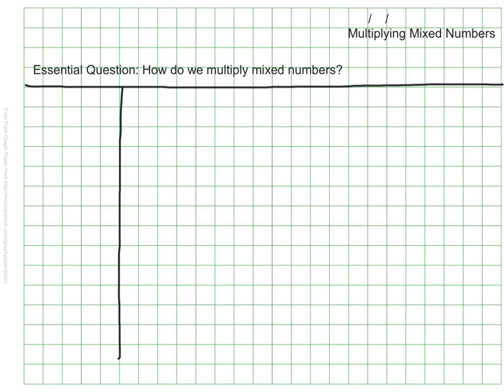We already know how to multiply fractions. So what we want to do is take what we know about multiplying fractions and figure out how we can multiply mixed numbers. For example, how would we multiply the following? We want to find one-third of two and a half.